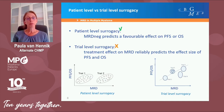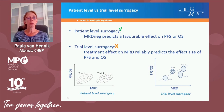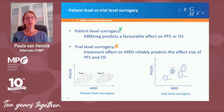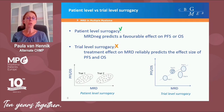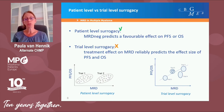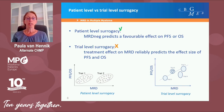Patient-level surrogacy means that MRD negativity predicts a favorable effect on progression-free survival or overall survival. Trial-level surrogacy means that the treatment effect on MRD reliably predicts the effect size of PFS and OS. Looking at the graph on the right side, what is actually needed to conclude on trial-level surrogacy is that across various trials, there should be a positive relationship between the extent of MRD negativity on the x-axis and the extent of PFS and overall survival gain.